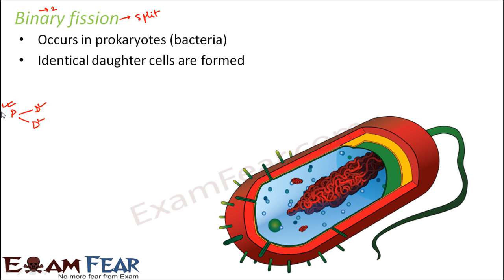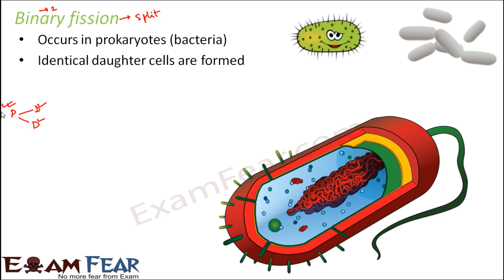As you know the difference between prokaryotes and eukaryotes — when compared to eukaryotes, prokaryotes have a simpler structure. Therefore the process of binary fission is also quite simple, and this type of cell division is faster than the cell division which takes place in eukaryotes.